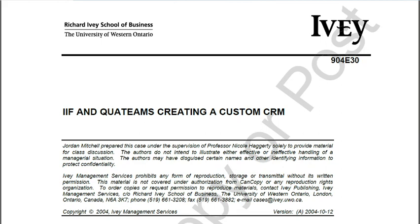Pros of open architecture include: software licenses don't need to be purchased for Java, XML, or XSL; the platform is scalable; and the CRM can theoretically be accessed and changed by another company. Cons include: QuaTeams created a seemingly complex system using several languages, making it hard for third parties to review or modify. IAF may become wedded to QuaTeams due to this complexity. Overall, the pros outweigh the cons.